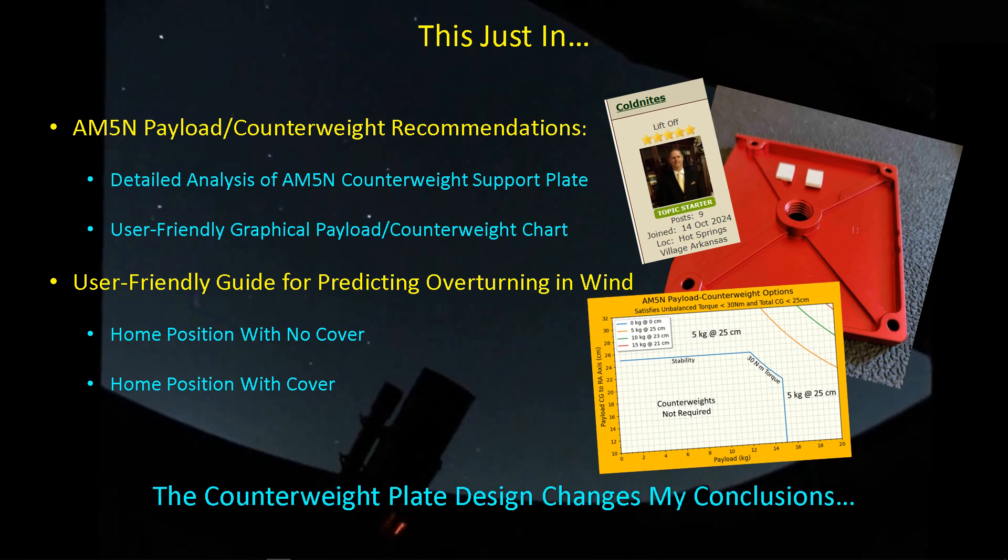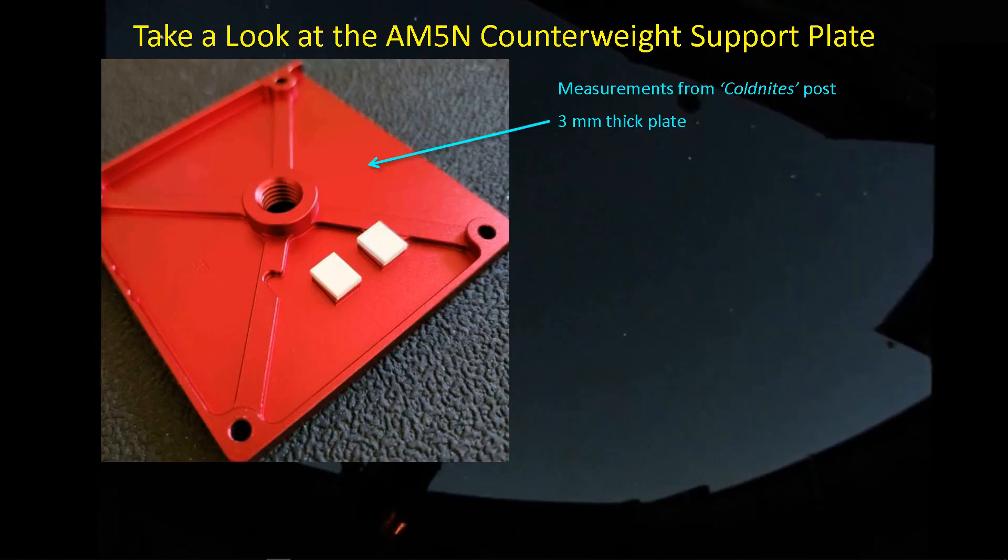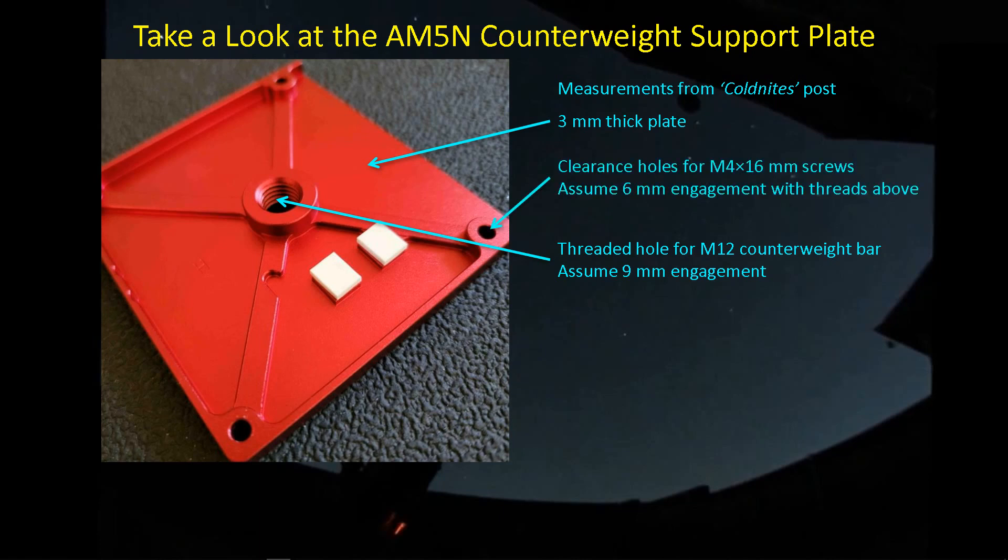Now that I see the counterweight plate design in detail, it does change my conclusions about how much weight we can use as a counterweight. We have a 3mm thick plate, then we have a threaded hole for the M12 counterweight bar, and I'm going to assume we have 9mm of thread engagement. That'll be important later when we look at the strength of these threads. At the other end, we have clearance holes for the M4 screws. They're 16mm long, and so they'll screw up into a threaded hole on the mount side, and I'll assume about 6mm of engagement for those threads up above. And then we have these ribs that are extremely important structurally as they're supposed to carry the load from the counterweight bar out to the four screw holes.